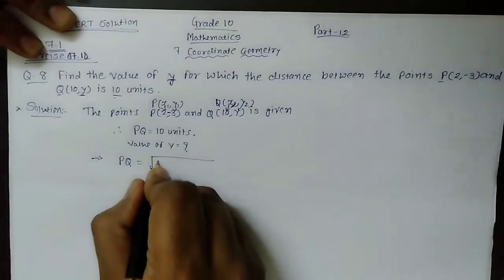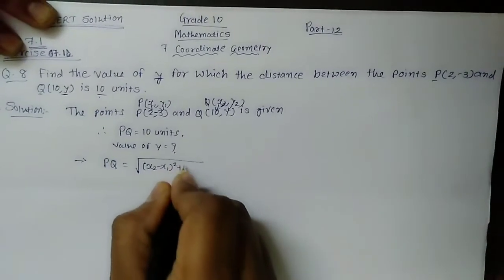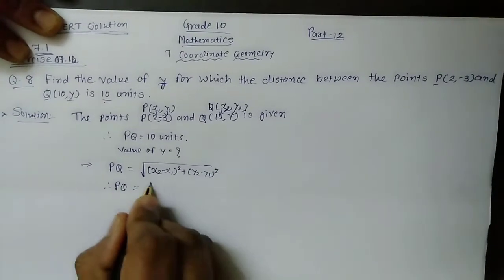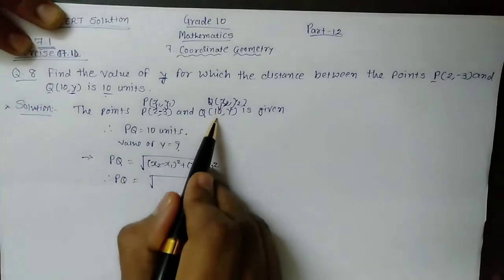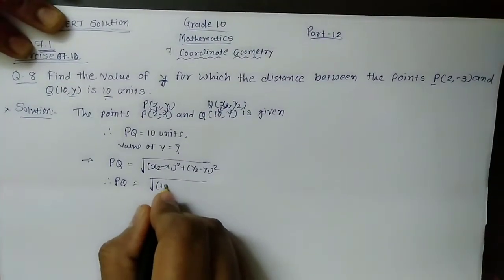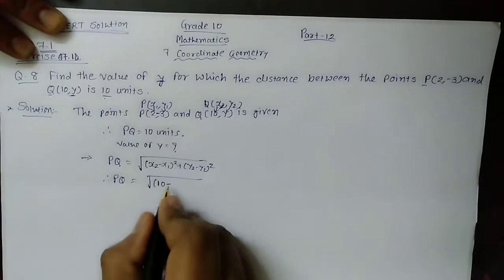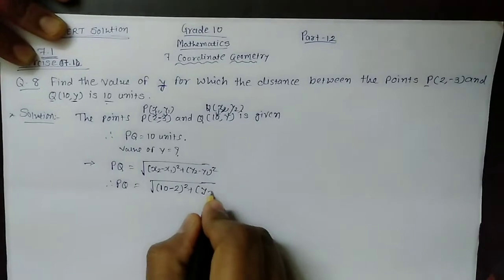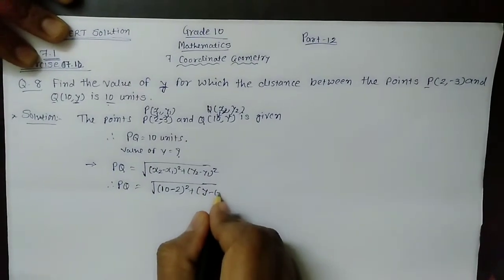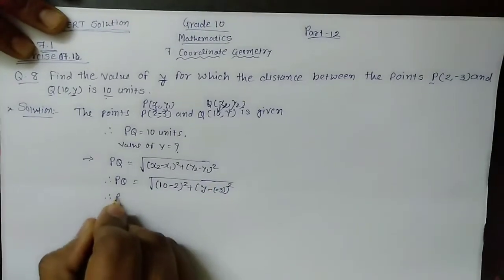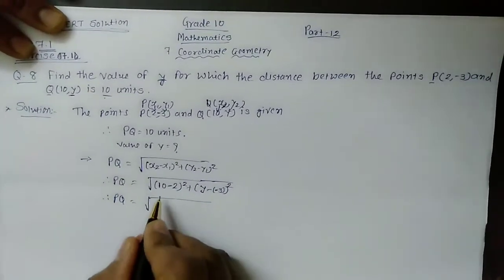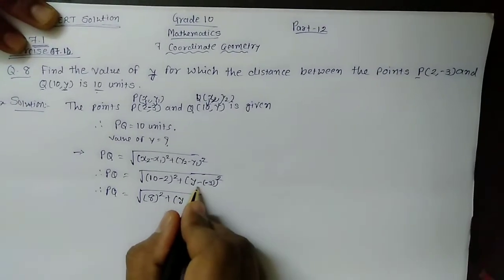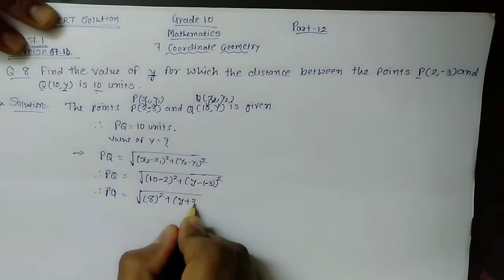We know the distance formula: PQ = √[(X2 - X1)² + (Y2 - Y1)²]. As per the formula, keeping the values: X2 is 10, so 10 minus X1 which is 2, giving (10 - 2)², plus Y2 is Y minus Y1 is -3, so (Y - (-3))², which becomes (Y + 3)².